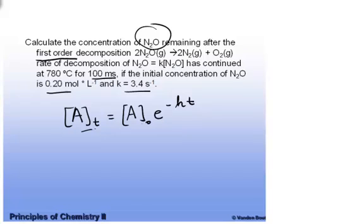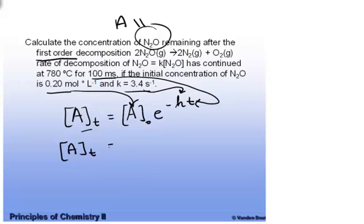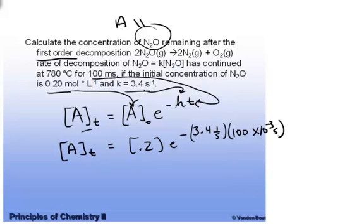A at time t is what we're looking for, the nitrous oxide at time t. The initial concentration is 0.2 molar. The K is 3.4 inverse seconds, and the time that has elapsed is 100 milliseconds. So we can just simply plug all these numbers into this equation that we've already prepared. Plug in 0.2 for the initial concentration, e to the negative K, K is 3.4 inverse seconds times the time that has elapsed, which is 100 milliseconds. So you have to multiply that by 10 to the negative 3 so that we can get the unit the same as the rate constant, which is in seconds. Just plug that into your calculator and you get the concentration at time t, which in this case is the concentration of the nitrous oxide at 100 milliseconds time elapsed equals 0.18 molar.